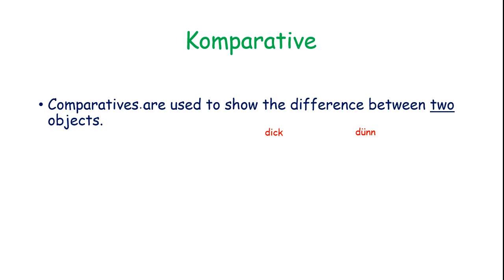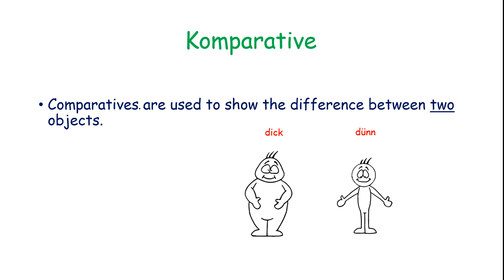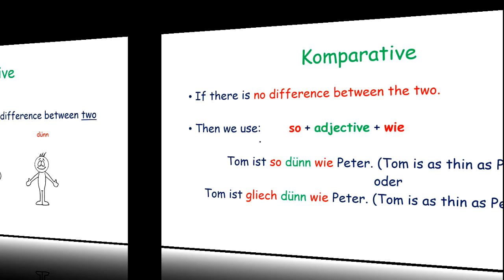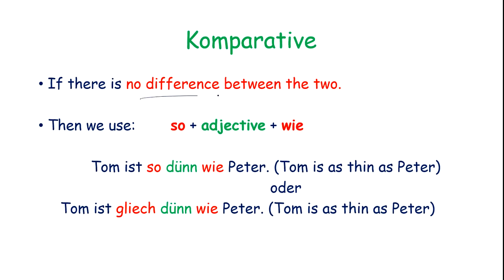Comparatives are used to show the difference between two objects. If there is a difference, then we use the Comparative form. Like: Tom ist dicker als John. And if there is no difference, then we use: So, adjective as it is — no change — plus wie. Tom ist so dünn wie Peter. Tom is as thin as Peter.